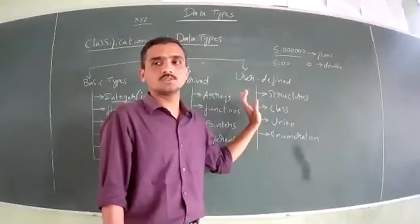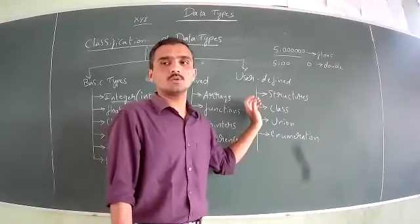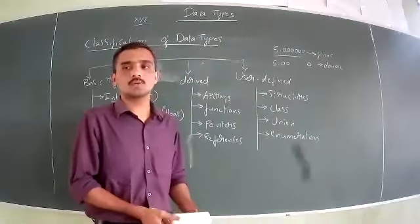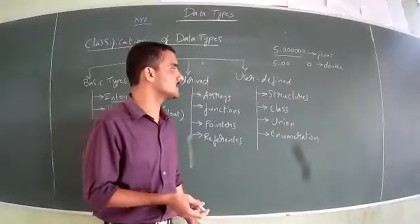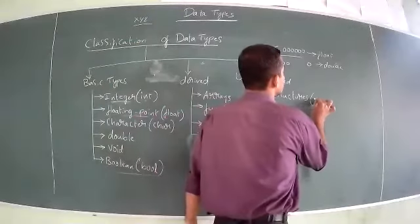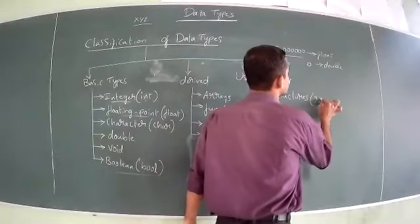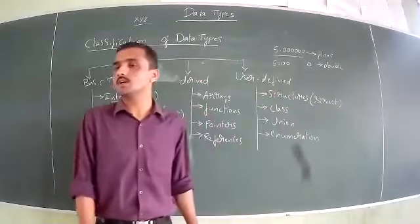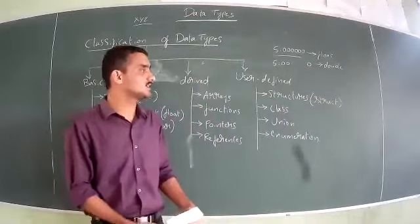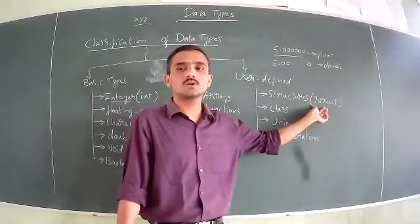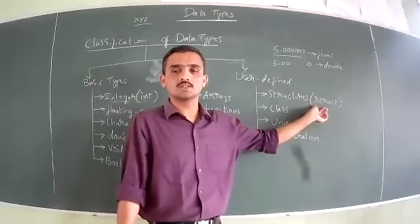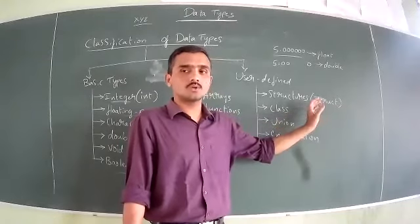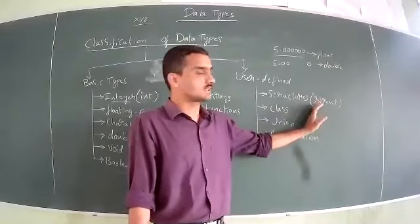Here I will talk about keywords because whenever you remember the keywords, it will be very easy to write the code and understand it. For structure, we use the keyword called 'struct'. And you have to write it in lowercase — that is the rule of keywords. So when you are writing keywords, you have to write in lowercase. The keyword for class is 'class', for union is 'union', and for enumeration is 'enum'.